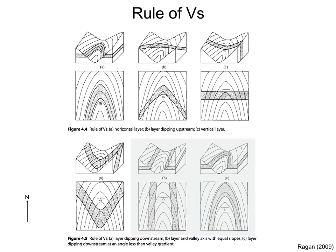So, the rule of Vs boils down to: layers that are horizontal follow the topographic contours across the valley. Layers that are vertical cross straight the valley. And layers that dip in between make a V across the valley. This V points in the direction of dip in most cases. Also, the steeper the layer is, the more straight its outcrop trace across the valley is.